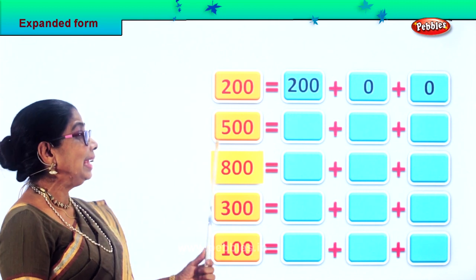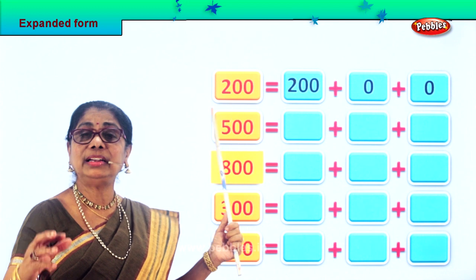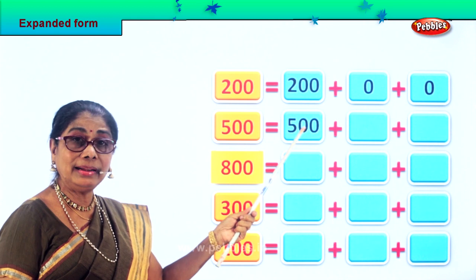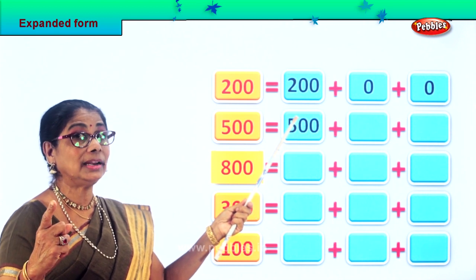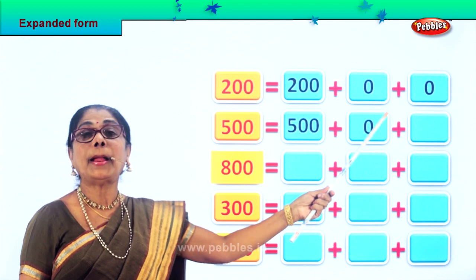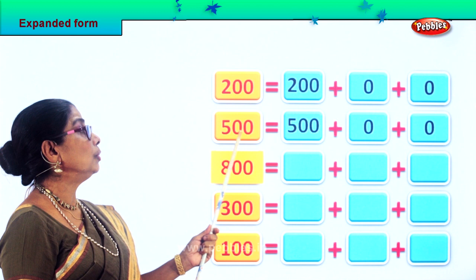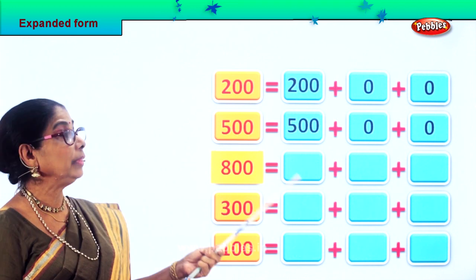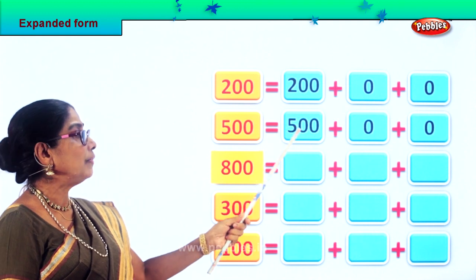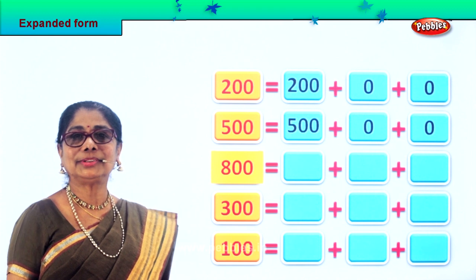Next we have five hundred. Five hundred is expanded as five hundred, because five is in the hundreds place, plus zero tens, plus zero ones, because we have zero in the ones and the tens place. Therefore five hundred is equal to five hundred plus zero plus zero.